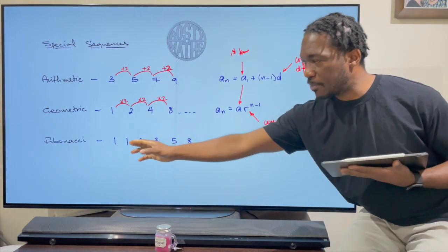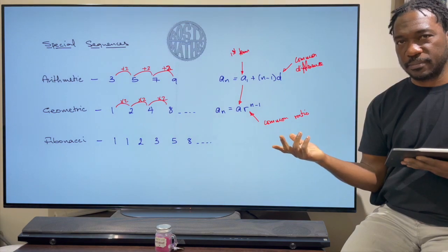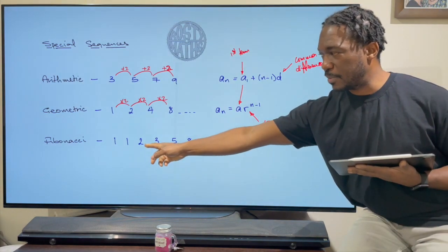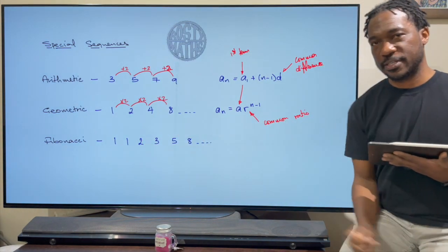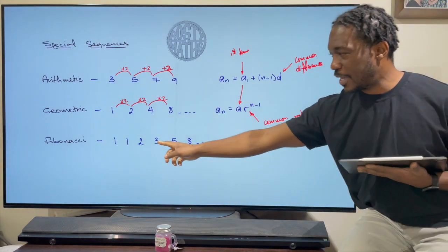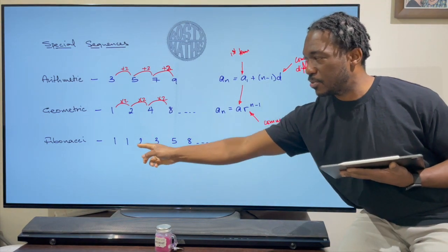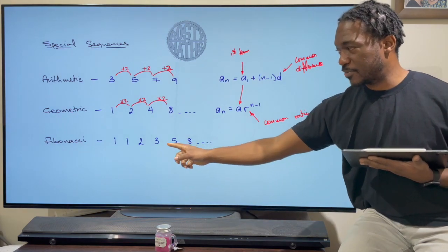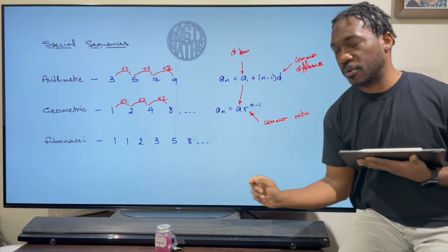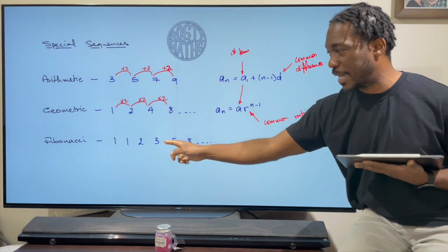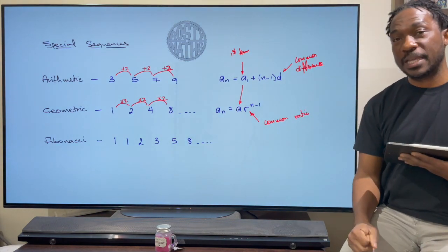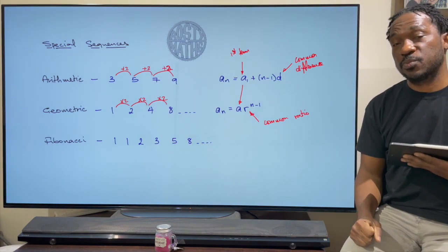So after I get my first two terms which are given, the next term is found by adding the first two terms. The next term is found by adding the two terms before it. This term is found by adding the two terms before it and so on. This is found by adding those two terms before it and that's how the Fibonacci sequence works.